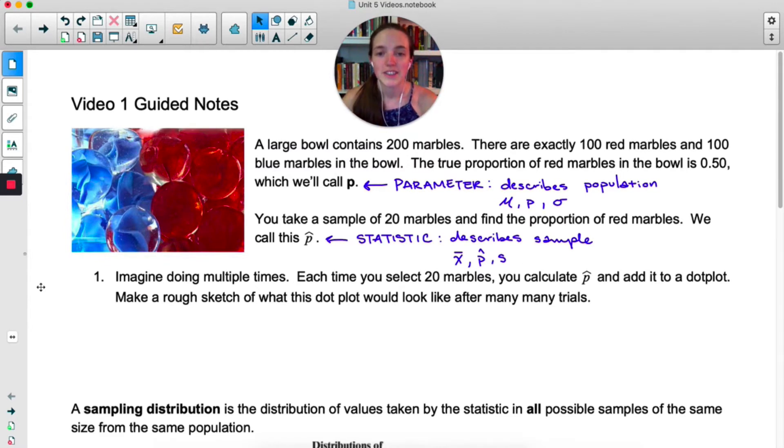Imagine doing this many times. You select 20 marbles, you calculate p hat, you add it to a dot plot, you put all the marbles back, you shuffle them up, and you do it again. Pause the video and make just a rough sketch of what that would look like. Where would it be centered? Would it be spread out? Would it be skewed? Would it be symmetric? Just kind of guess what you think it would look like.